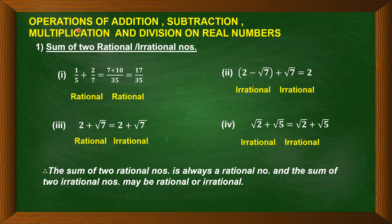Now let us take up mathematical operations one by one. First, addition. For two rational numbers: 1 by 5 plus 2 by 7. We get (7 plus 10) upon 35, which equals 17 by 35 — a rational number. So the sum of two rational numbers is always a rational number.